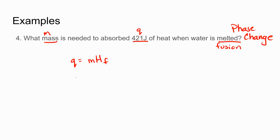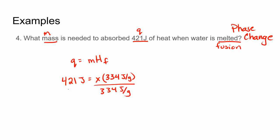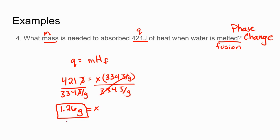Hf is a constant on page one. Plugging in: 421 joules equals x times the heat of fusion for water, which is 334 joules per gram. To get our mass, we divide both sides by 334. So 421 divided by 334 gives an answer of 1.26 — three significant figures because that's the significant figures in our heat value. Joules cancels, leaving grams: so 1.26 grams of water.